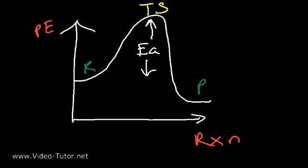If you don't get past that hill, the reaction will not proceed. And so the higher the activation energy, the slower the reaction.